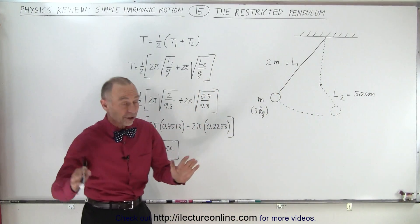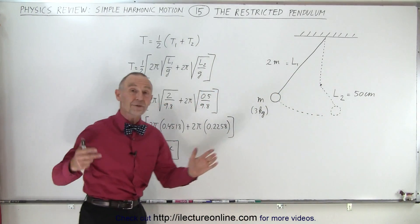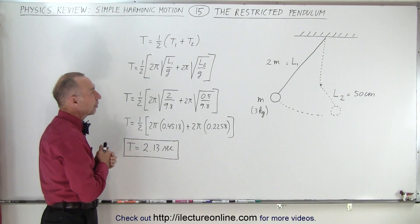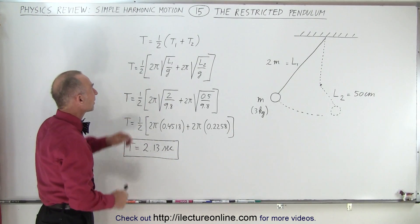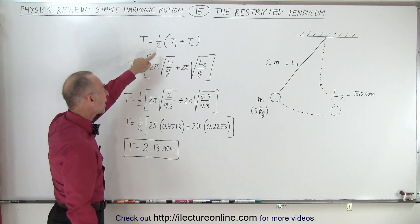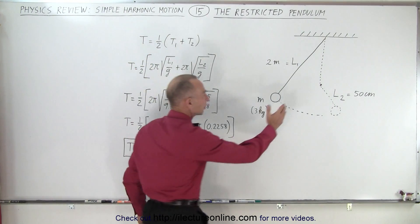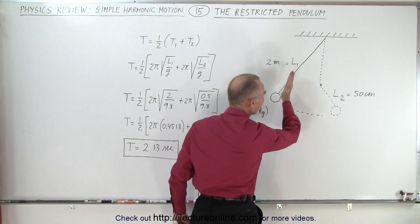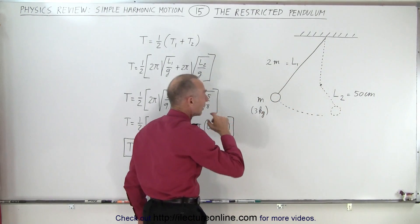Assuming no energy is lost, this can just happen forever. So how do we deal with that? Well, it turns out that the total period is equal to one-half times the sum of the period the pendulum has on the left side and the period the pendulum has on the right side.